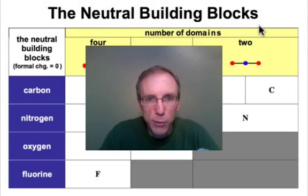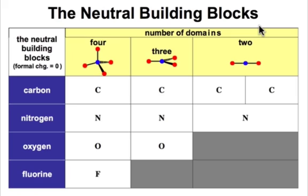All right, here we go, the building blocks of organic chemistry. We're going to organize this set of tables based on formal charge. We're going to also be looking at the number of domains across the top from 4, 3, and 2. And each row will represent a different atom, carbon down to fluorine across the periodic table.